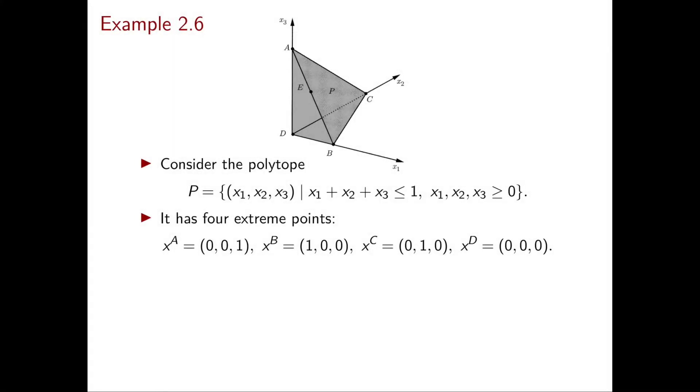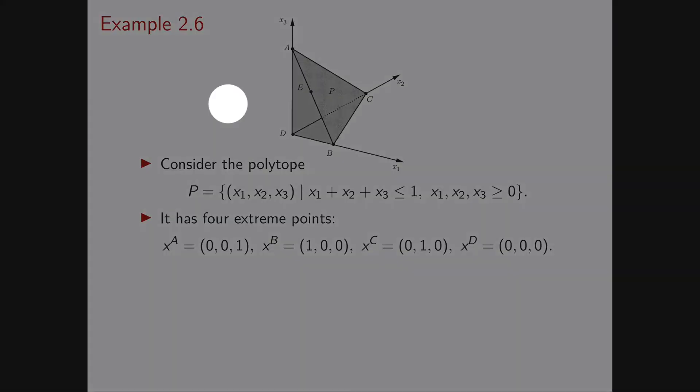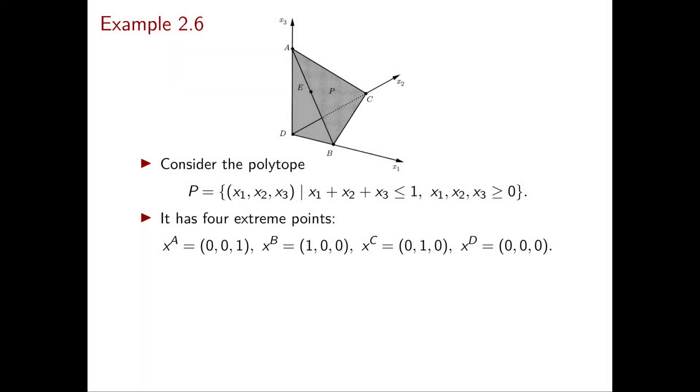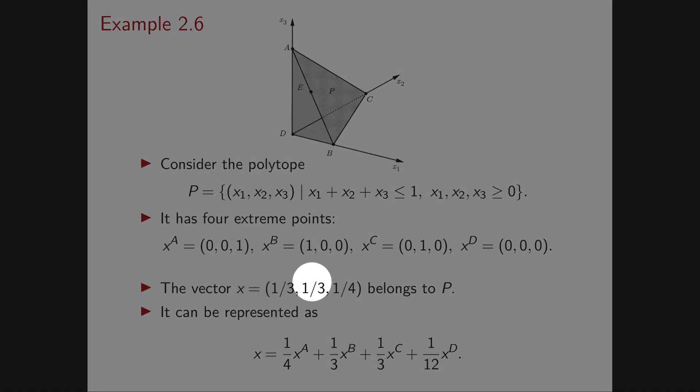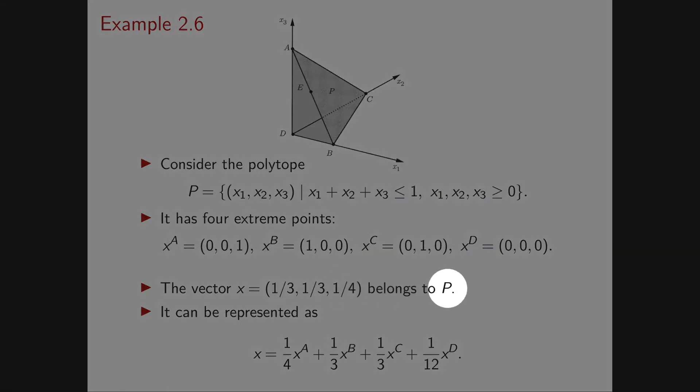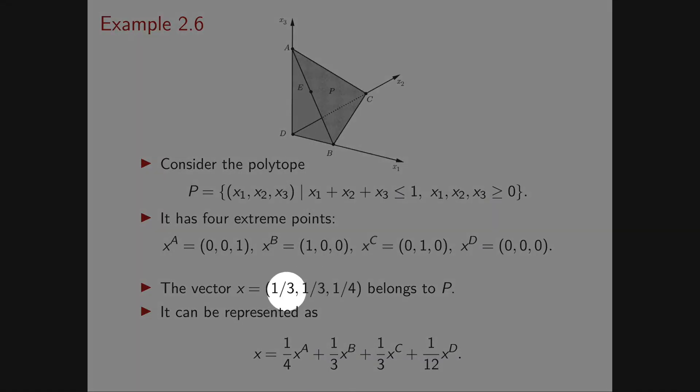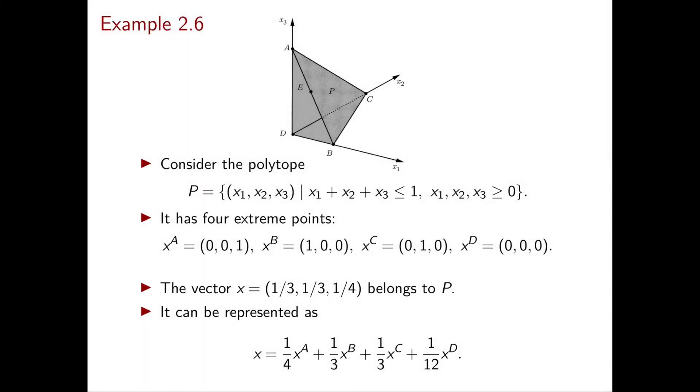How can we check these two different types of representation? One direction is to pick any vector in P and check that it can be written as a convex combination of the four extreme points. For example, pick the vector (1/3, 1/3, 1/4). This vector belongs to P: all components are non-negative and their sum is less than or equal to 1. We should be able to write it as a convex combination of the four extreme points.